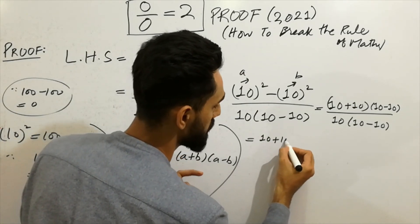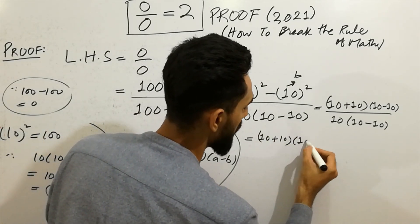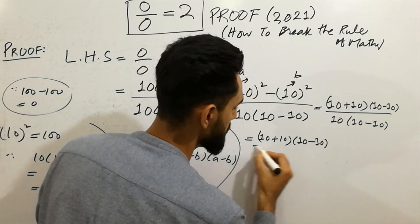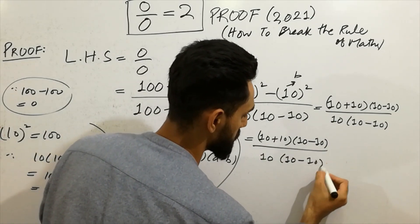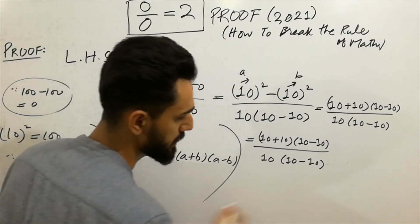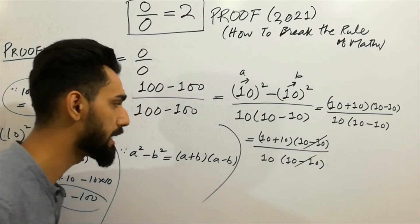10 plus 10 as it is. 10 minus 10 as it is. And next, 10 bracket 10 minus 10 is as it is. Now you can note that these are cutting something. 10 minus 10 will be called. And next step.